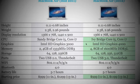Moving on to memory, there are some notable differences. The mid-2011 model has 2 or 4 gigabytes of DDR3 memory clocked at 1333 megahertz, whereas the 2012 MacBook Air comes with 4 or 8 gigabytes of DDR3L memory at 1600 megahertz — a big difference, and it's great to see Apple doing that.